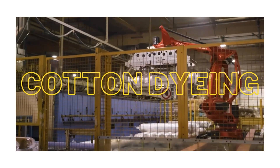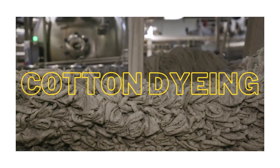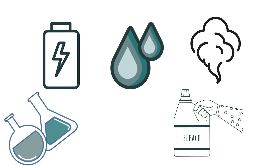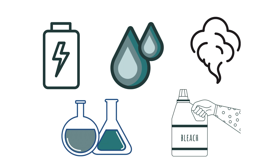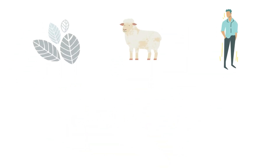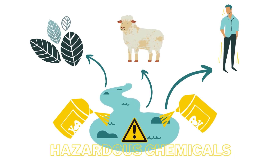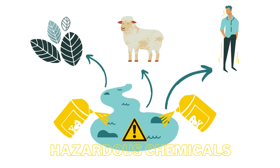Once cotton is harvested and turned into textiles, cotton dyeing becomes a concern. It's one of the most contaminating parts of the whole textile process. It involves the use of vast amounts of energy, water, steam, and assorted chemicals such as bleaching agents, dyes, wetting agents, soap, softener, and salts. High amounts of wastewater generated in dyeing contaminate rivers and groundwater with toxic dyes from brominated flame retardants and stain repellants. These hazardous chemicals are extremely dangerous for plants, animals, and people that use contaminated water.